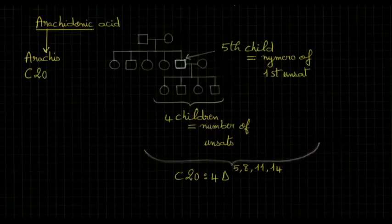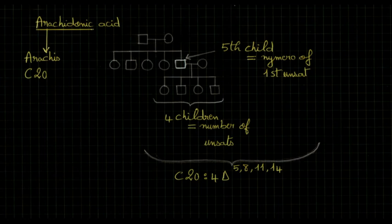Moving on to arachidonic acid. For this one I associated it to my neighbor. His name looks like Arachid. He is the fifth child of his parents and the father of four children. Four is for the number of unsaturations we got. Five is for the first unsaturation's number. For the total number of carbons it's 20 because arachidonic is close to the word arachidic, and we know arachidic acid has 20 carbons. Or if you know Arabic numerals, the number 20 is ashrine, somehow close to arachidonic.